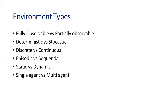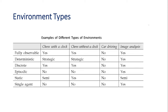Based on the environmental types, the environment plays an important factor when designing an agent. You have to look into the environment and develop actions for all possible criteria, which is really difficult. Examples include chess with a clock, chess without a clock, car driving, and image analysis. Chess is fully known; car driving is not fully known. You can go through these examples for all different types of environments. Thank you.